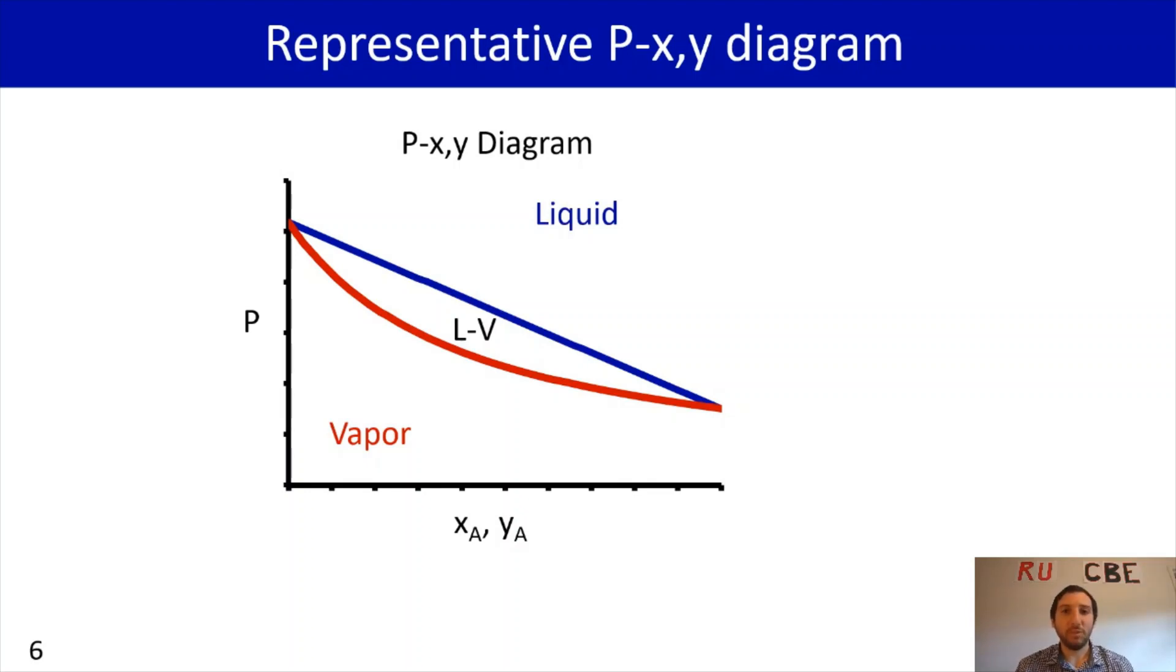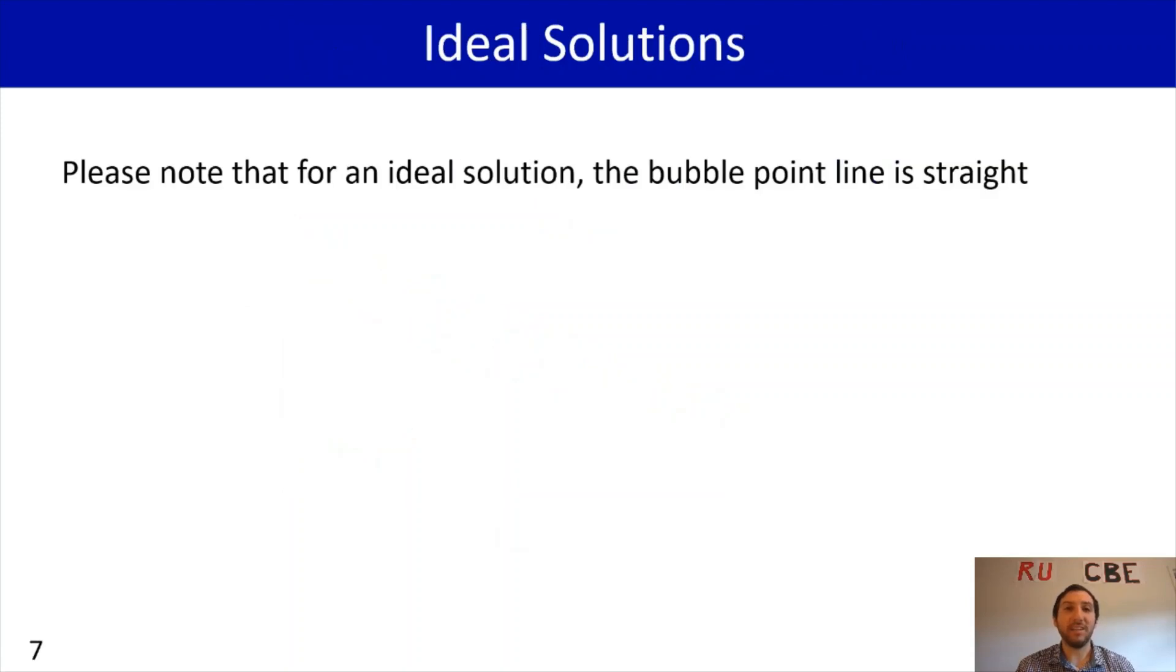Now, as a reminder, we're dealing with ideal solutions. And because we have an ideal solution, we're going to have a straight line for the bubble point line. And when we have non-ideal solutions, that curve is going to look a lot more complicated.